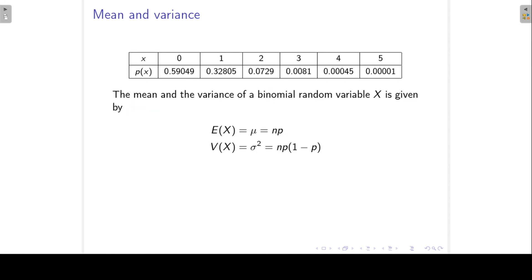If my random variable x follows a binomial distribution with parameters n and p, then the expected value of x is n times p, and the variance is n times p times (1 minus p).